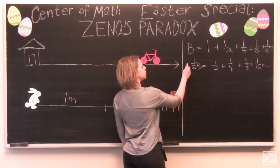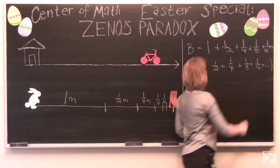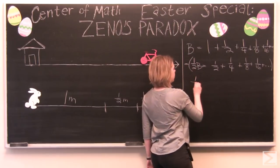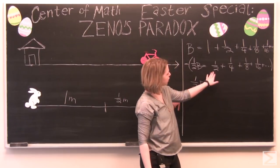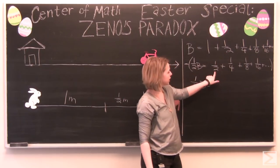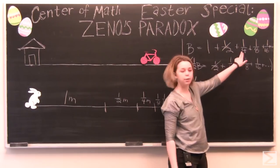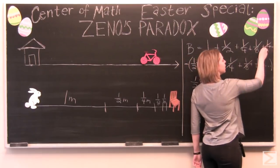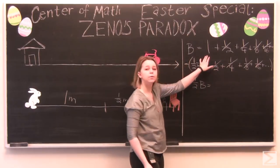And now we're going to subtract this entire equation from our original. So b minus one half b. That's one half b. And let's look at what we have here. One half minus one half is going to cancel out. It's going to be equal to zero. And one quarter minus one quarter cancels out again. And each of these terms are going to cancel out except for the one.